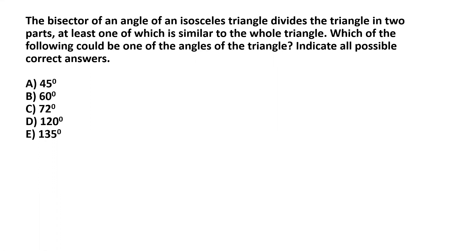We have to be really careful and consider all the different cases to make sure that we aren't missing anything. We start by considering this isosceles triangle ABC where AB is equal to AC, so angle ABC will be equal to angle ACB — let each of those be equal to x. Since the sum of angles of a triangle is 180 degrees, and we already know two angles as x and x, the third angle must be 180 degrees minus 2x.